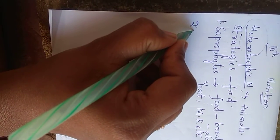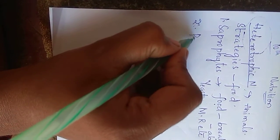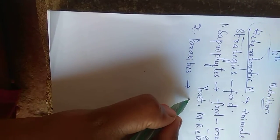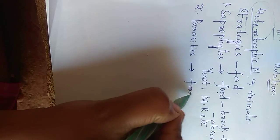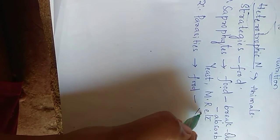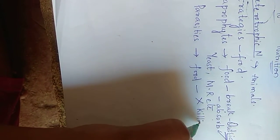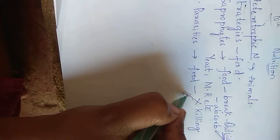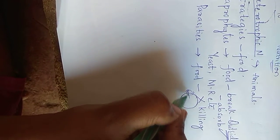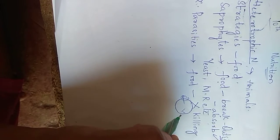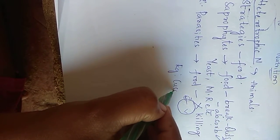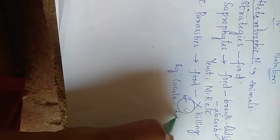Second one is parasites. These are organisms which obtain food from other organisms without killing them. For example, this is a parasite. From other organisms it will get food but it will never kill this organism. Examples are cuscuta, lice, etc.